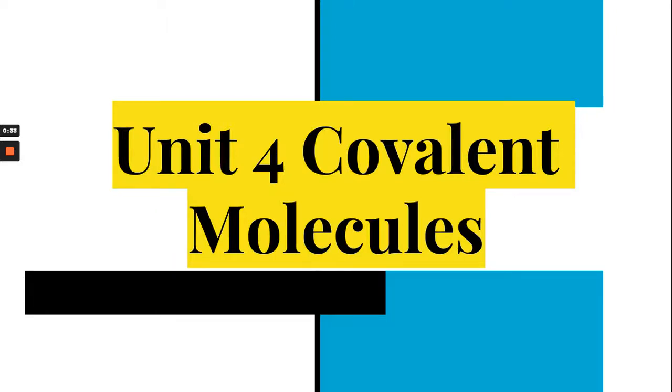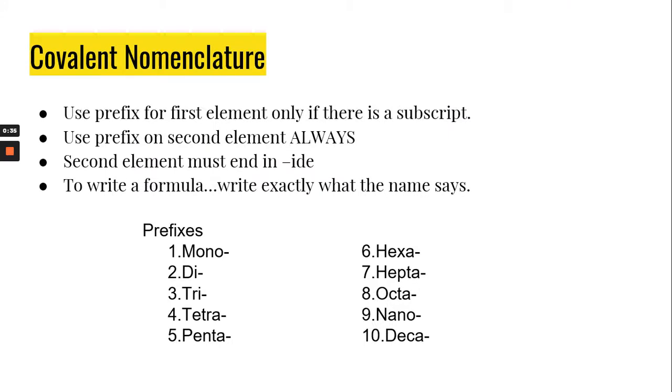Unit 4 is about covalent molecules. The first thing that we need to discuss is how to name covalent molecules. What you have to remember is that covalent molecules are made of two non-metals.